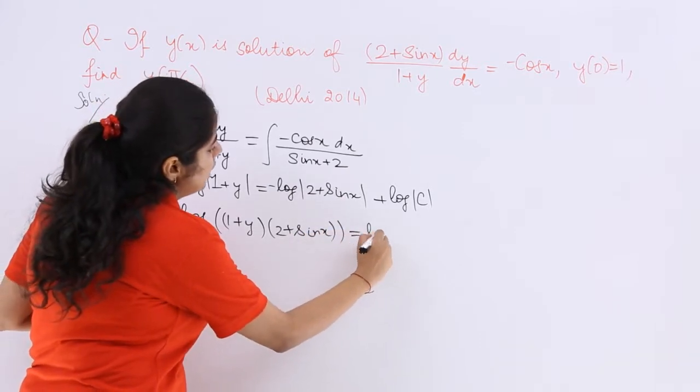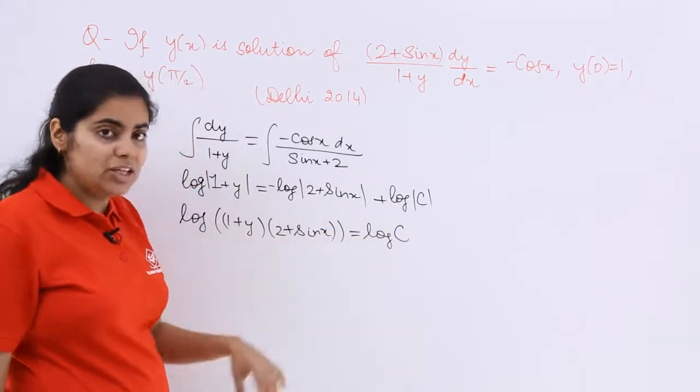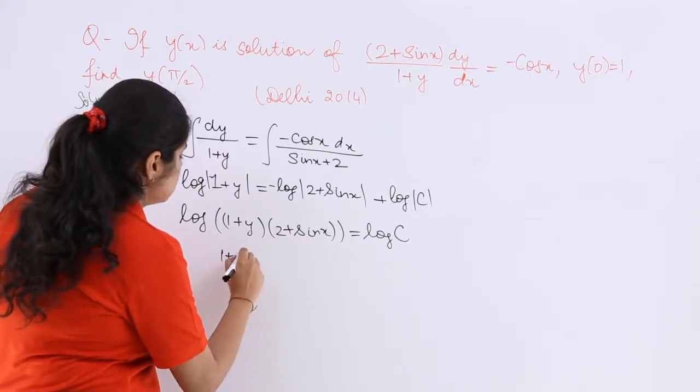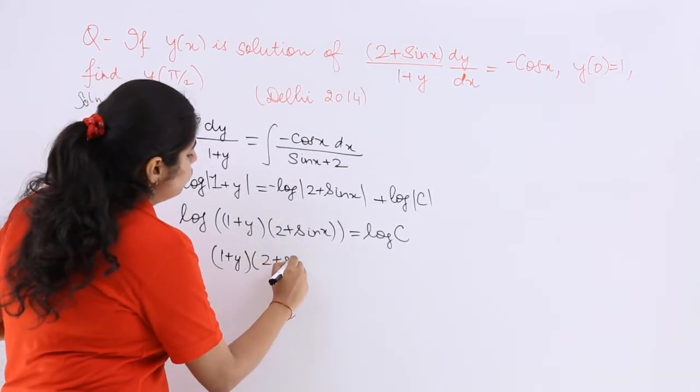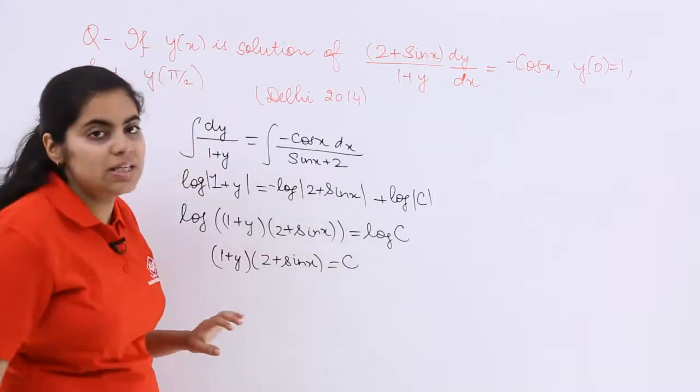And here it is log c. Let's nullify each other's effect. So 1 plus y multiply by 2 plus sin x is equal to c.